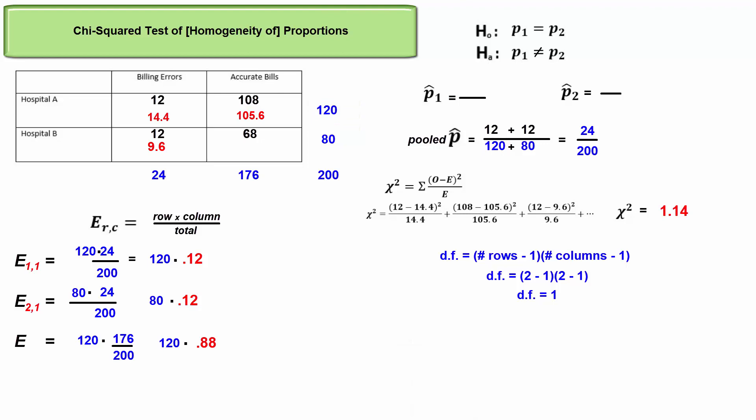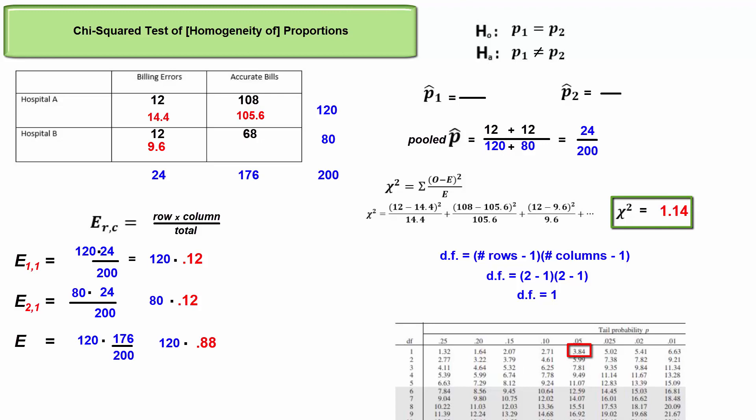The critical chi-squared value with one degree of freedom trapping five percent is 3.84. Since our test statistic is not this extreme, we fail to reject the null. The evidence fails to suggest a difference in the proportion of billing errors between the two hospitals.